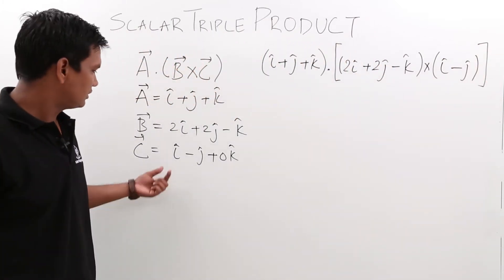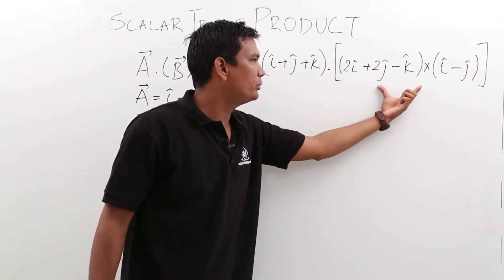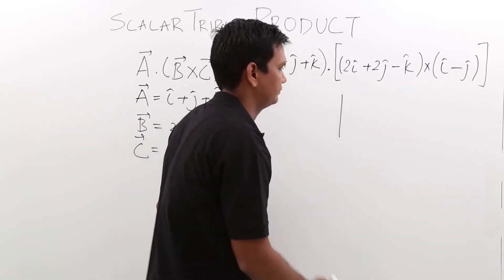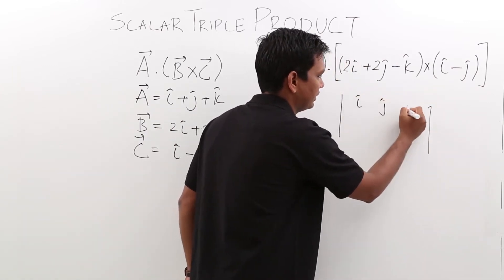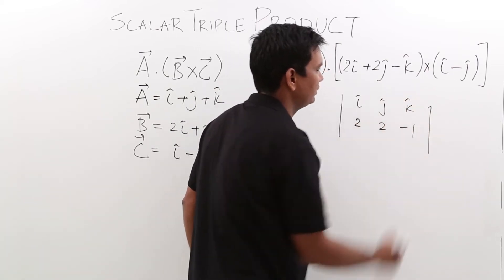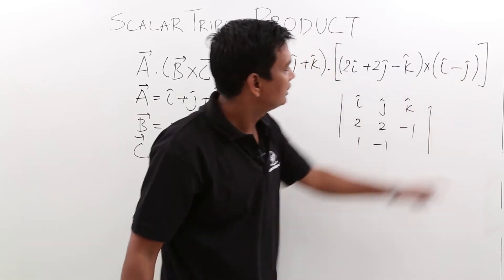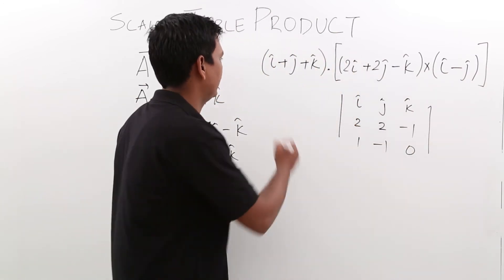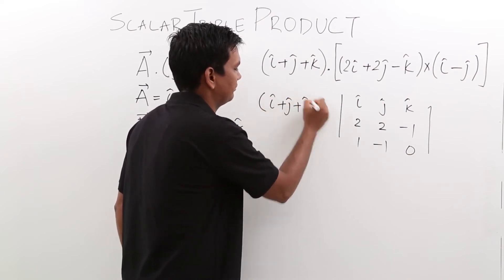Now, first I will conclude the cross product and then I will conclude the dot product. The resultant of the cross product would be concluded using the determinant: i cap, j cap, k cap with the second row 2, 2, minus 1 and the third row 1, minus 1, 0.